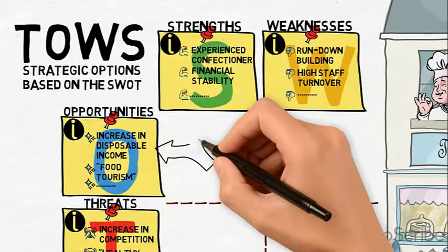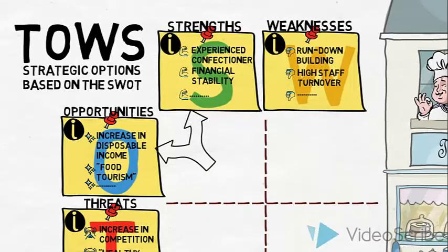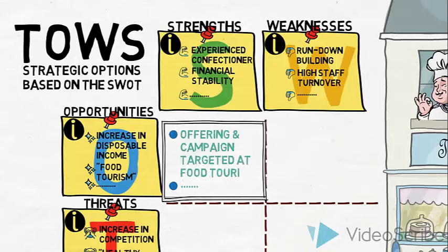Now let us see what strategic options our strengths and opportunities allow us to create. One option could be to create an offering and campaign targeted directly at food tourists. Our strength in having a highly skilled and experienced confectioner allows us to capitalize on this recent trend.